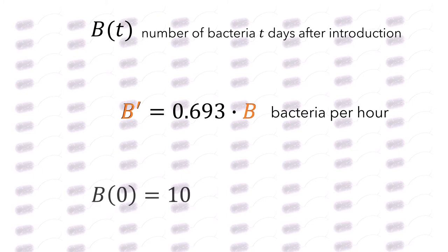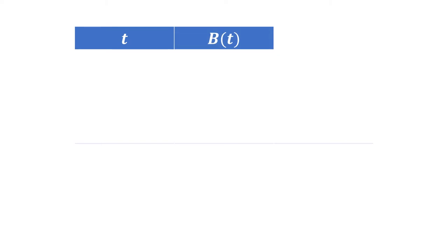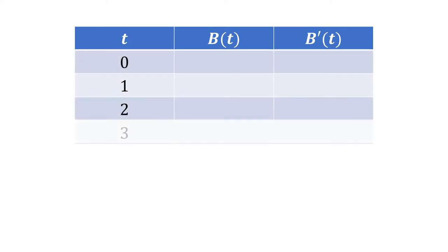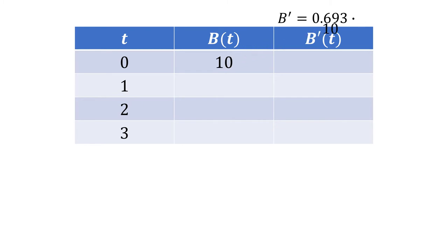Let's say we started with 10 bacteria. How could we figure out the number of bacteria after three hours have elapsed? Let's start by making a table to keep track of our work. We'll keep track of the number of days, the number of bacteria, and the rate at which the number of bacteria is growing, and we'll record our data each day until day three. We know that there were originally 10 bacteria, and our values for the rate are given by the formula b prime equals 0.693 times b. So if we use this value of b in the equation, we'll get that the number of bacteria is increasing at a rate of 6.93 bacteria per hour.